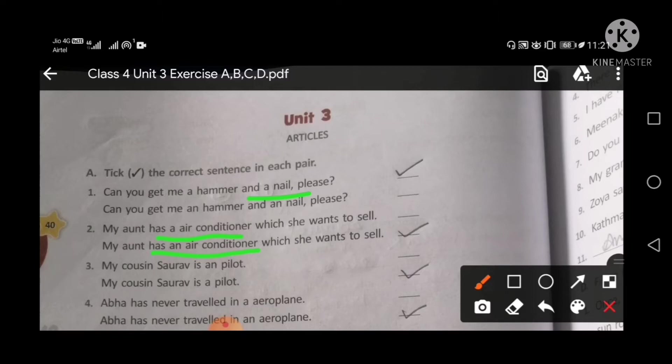My cousin Sorab is an pilot. My cousin Sorab is a pilot. Pilot P is a consonant, so we use here a. So like this, it is right.